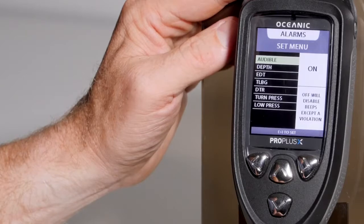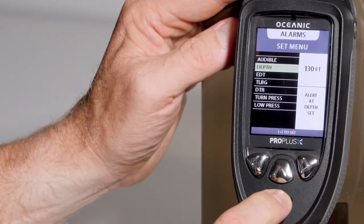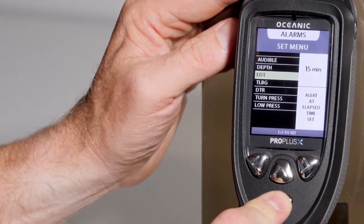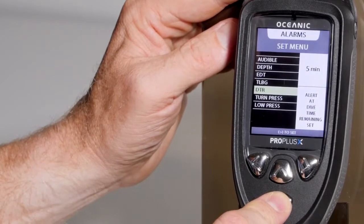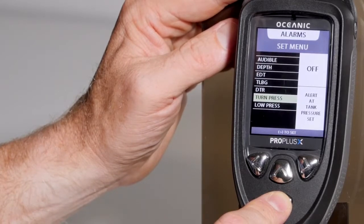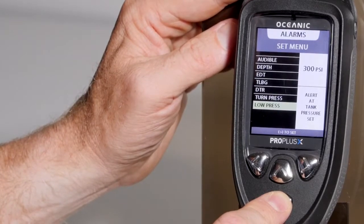Inside the set alarm menu, you can set up all the different alarms the computer has. The master audible alarm on or off. A max depth alarm. An elapsed dive time alarm. The tissue loading bar graph alarm. Dive time remaining alarm. A turn gas alarm. If you want to be reminded at say 1500 psi to go back to the boat, you can set that up. And your end gas or low pressure alarm.